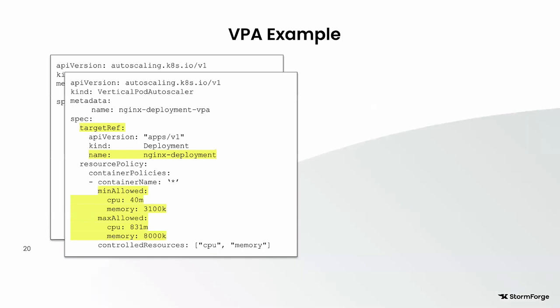Looking at the YAML manifest of a typical VPA — I've highlighted in yellow the specific things for a given application: the name, the minimum CPU you'll tolerate, the maximum memory. This is for Nginx, which is not resource-intensive at all, but you need to know this for everything. What I typically see is some center of excellence team providing templates to users saying 'use this,' without really providing guidance on how to fill them in.